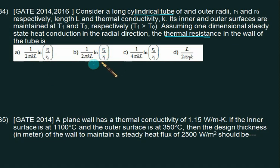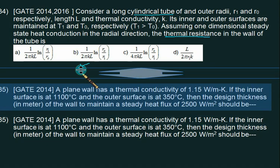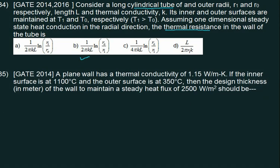We are given R1 and R0 respectively as radii. So choice B is correct: 1 upon 2π KL, ln of R0 by R1. Thank you.